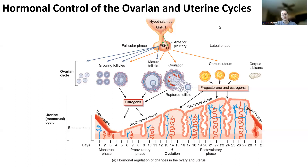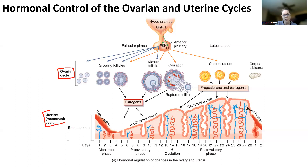The hormonal control for women is more complicated than for men because you're tracking four hormones, and that has to be tracked over a 28-day cycle. Not only that, you're going to have hormones that affect two different parts of the female reproductive system. These things happen simultaneously, which is why there are days on this timeline.